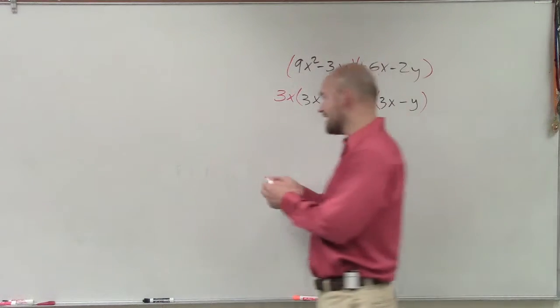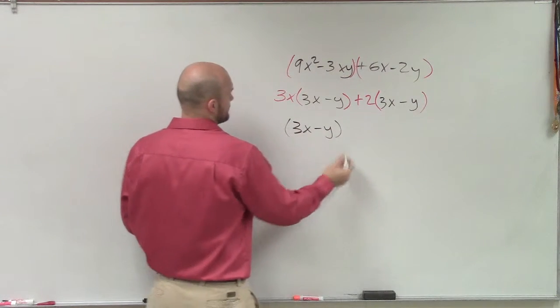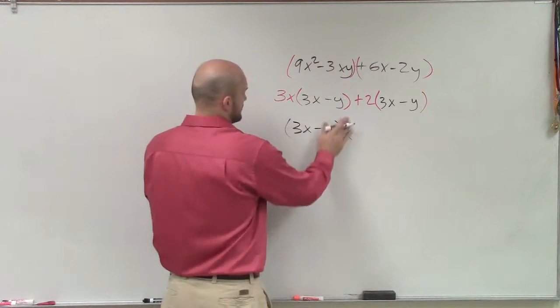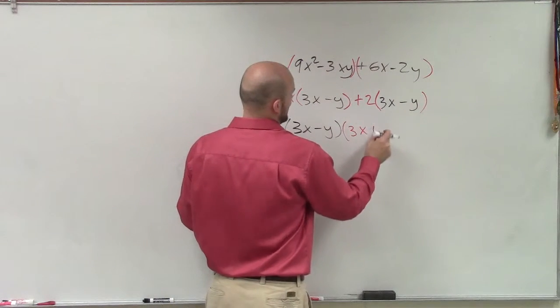So what I have to do now is factor out the 3x minus y. And I'm left with 3x minus y times 3x plus 2.